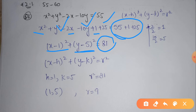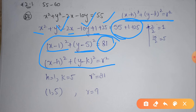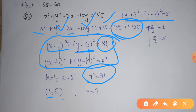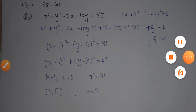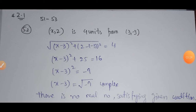Adding all terms on the right side gives 81. So we have transformed our given equation using the completing the square method into the standard form of the equation of a circle. Comparing: H equals 1, K equals 5 — so the center point has X coordinate 1 and Y coordinate 5 — and R squared equals 81, meaning the radius is 9.